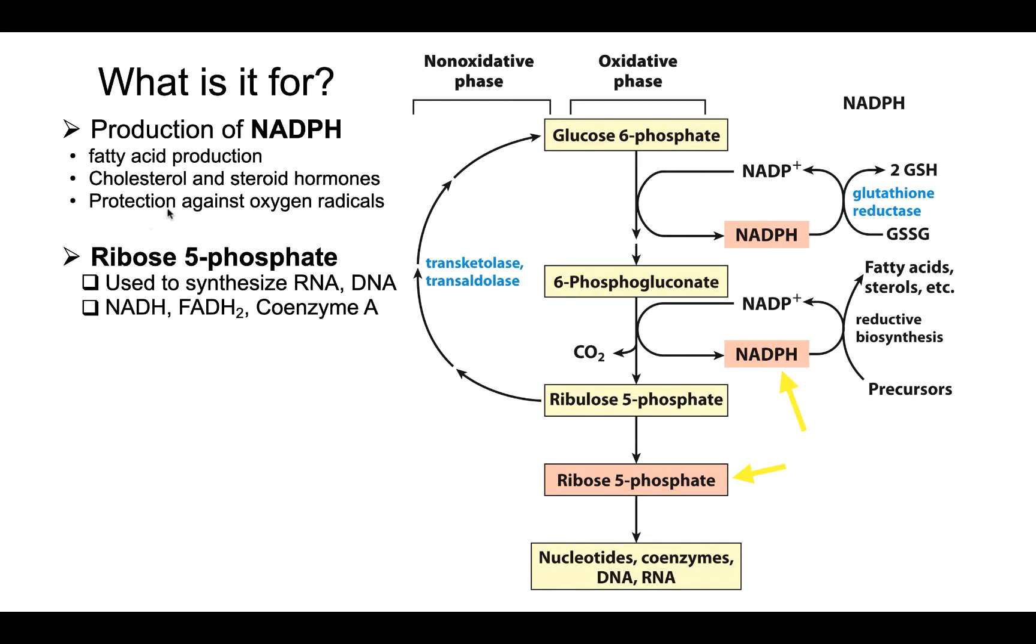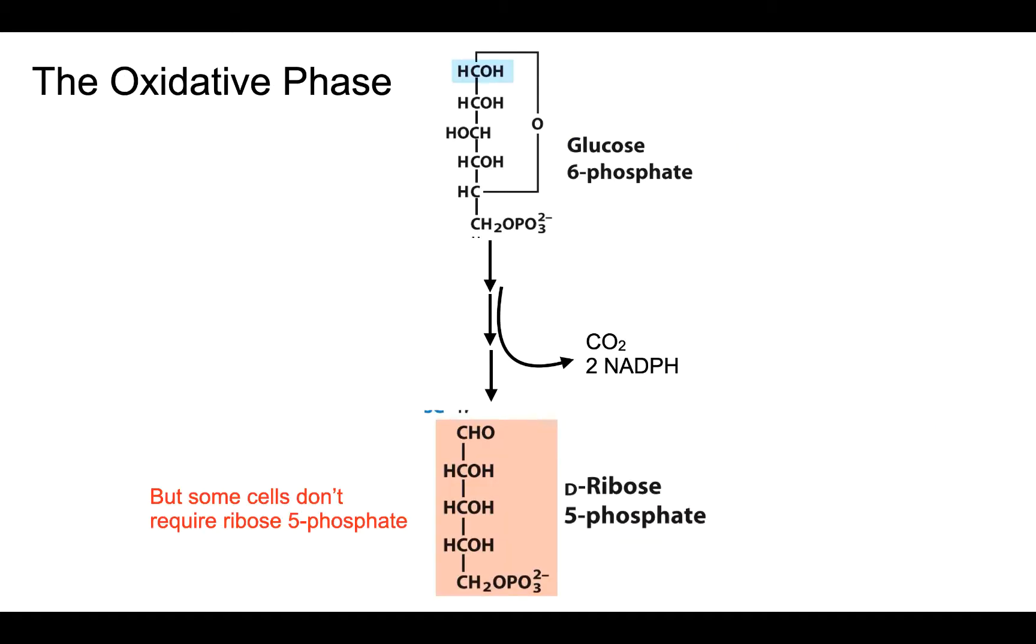it's involved in protecting against oxygen radicals. Now there are two phases to the pentose phosphate pathway. The first is the oxidative phase, the phase in which we are getting our NADPH and our product,